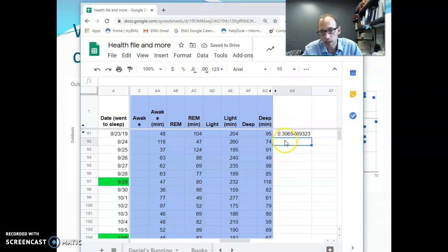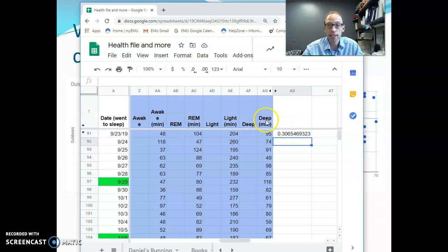And here I'm getting a correlation of R equals 0.306, so 0.31. So it is positive. The more REM I'm getting in a particular night, the more deep sleep I'm also going to tend. As one goes up, the other one goes up. And I could do it either way. The more deep sleep I get, the more REM I get. Or the more REM I get, the more deep sleep I get.